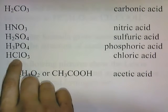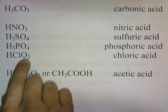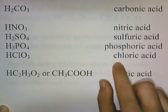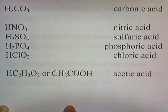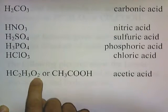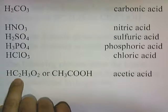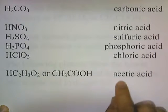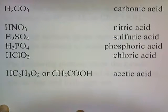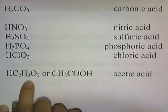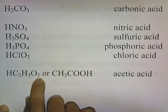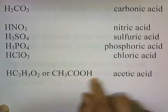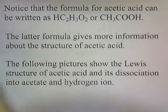HClO3, which contains chlorate ClO3, is chloric acid. HC2H3O2, which contains acetate C2H3O2, is acetic acid. There's another way of writing acetic acid — you can write HC2H3O2 or CH3COOH. Notice that the formula for acetic acid can be written as HC2H3O2 or CH3COOH.